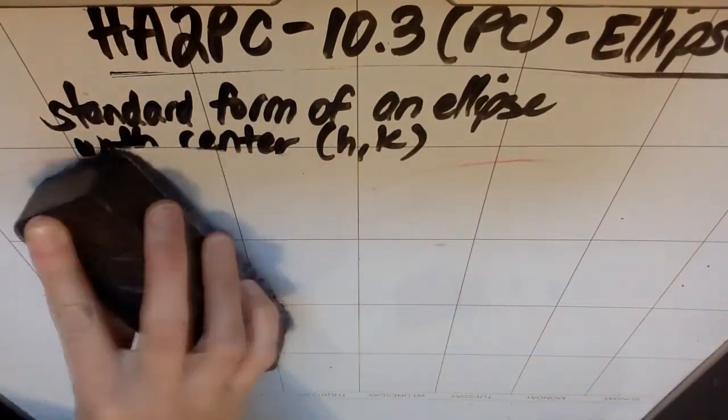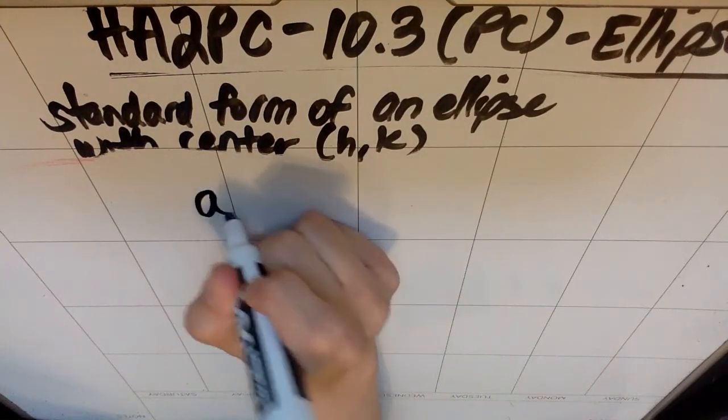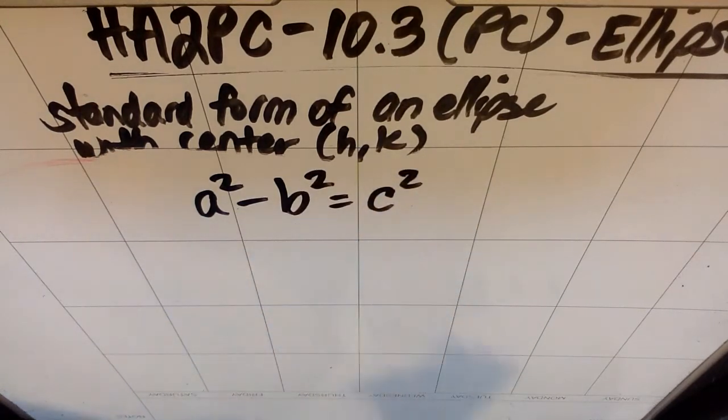So there's a way to find c when we go to find c, which is the distance from the center to the foci. The way my brain always remembers it is that it's not Pythagorean theorem. So for ellipse, a squared minus b squared equals c squared.